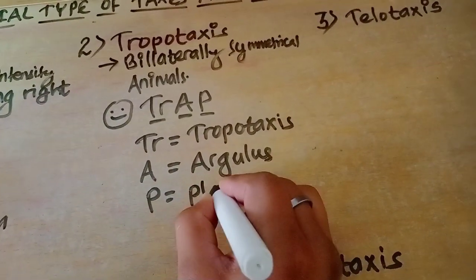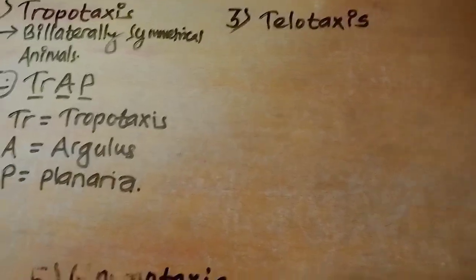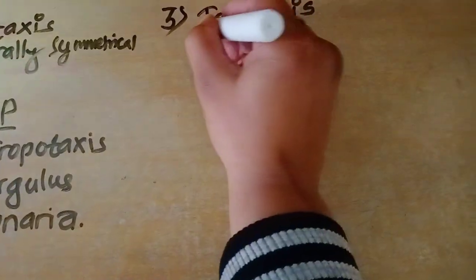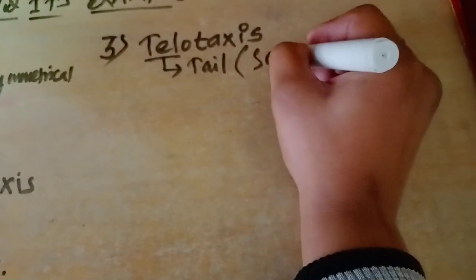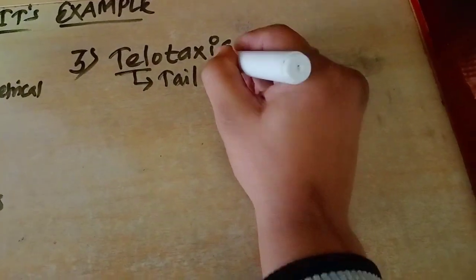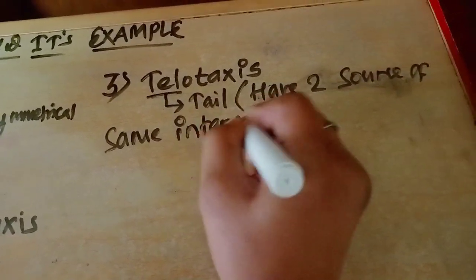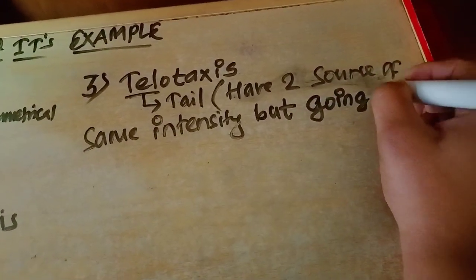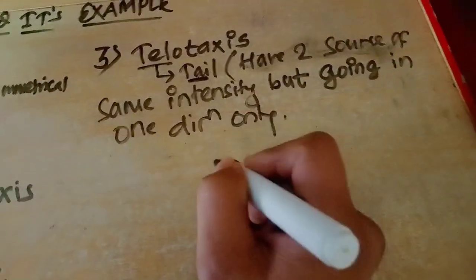Now we have telotaxis. Don't worry — at the end I will provide a screenshot of all of this. In telotaxis, there are two sources of same intensity light, but the animal goes in one direction only. I use the clue 'till' — one direction only — to remember telotaxis.